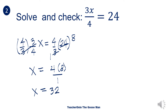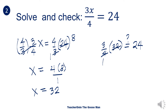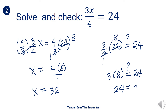Let's check if x = 32 makes the equation correct. Substituting x = 32 into 3 fourths x: is it equal to 24? Look for the GCF of 32 and 4, which is 4. So 4 divided by 4 is 1, and 32 divided by 4 is 8. Then 3 times 8 — is it equal to 24? Yes, 24 is equal to 24, so this is correct. The value of x equal to 32 is the correct answer.